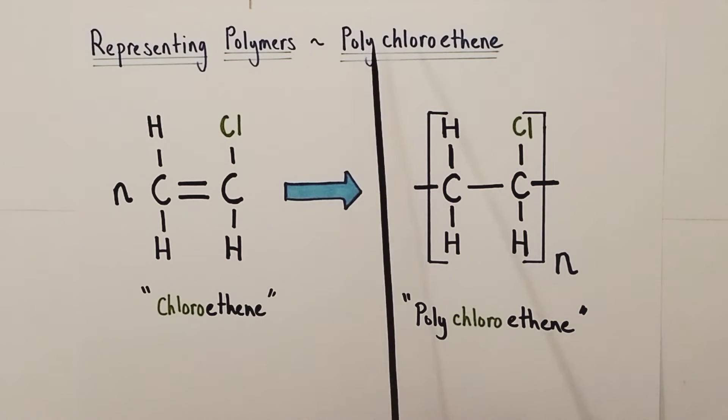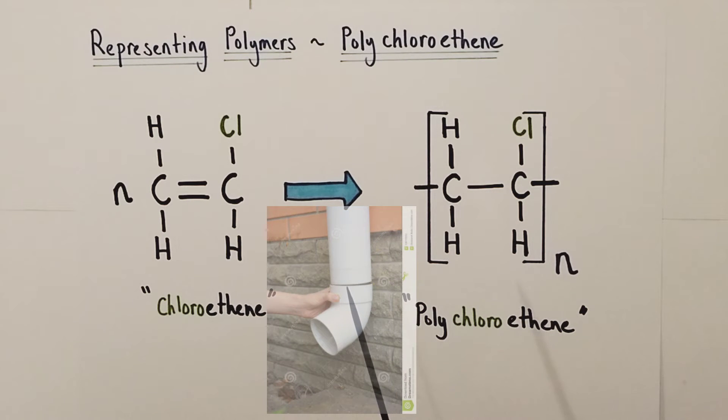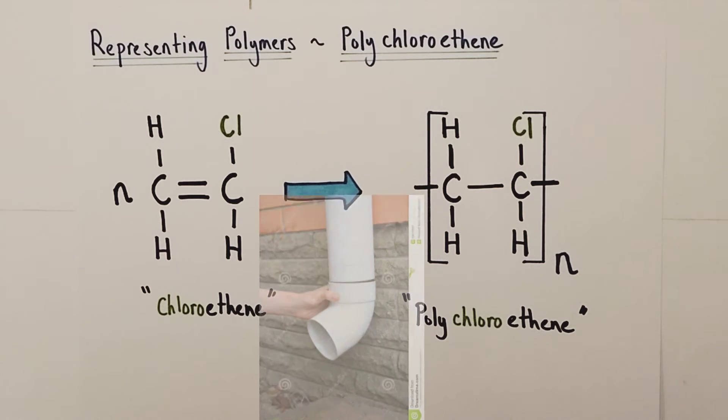Now the uses of polychloroethene are mainly linked to the fact that it's a highly waterproof plastic. The most common use you will see around us is it's used in PVC, polyvinyl chloride, guttering on houses and other buildings. So it's a hard-wearing durable waterproof plastic.